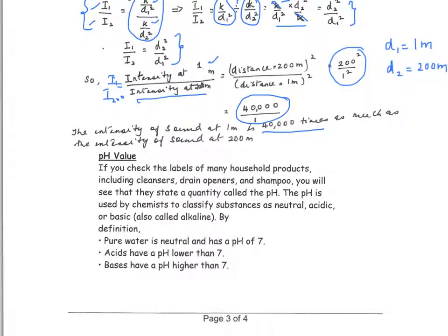Now, you're familiar with pH values. Here is the basic idea: pure water is neutral and has a pH of 7. Acids have a pH lower than 7 — anything below 7 is acidic. Anything above 7 is a base, or basic solution. So pH below 7 is acidic, pH above 7 is basic, and pH at 7 is neutral.